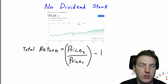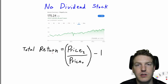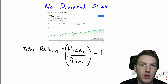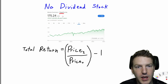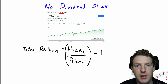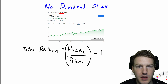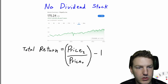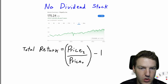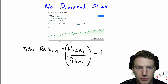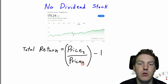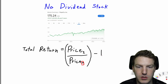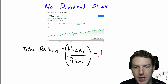In order to calculate the total return on a stock, let's first walk through an example of a no-dividend stock. We're going to assume that PepsiCo has not paid any dividends over the last five years. Our return for this situation is: total return equals price at time 1 — when we sell the stock — divided by price at time 0 — when we purchase the stock — minus 1.